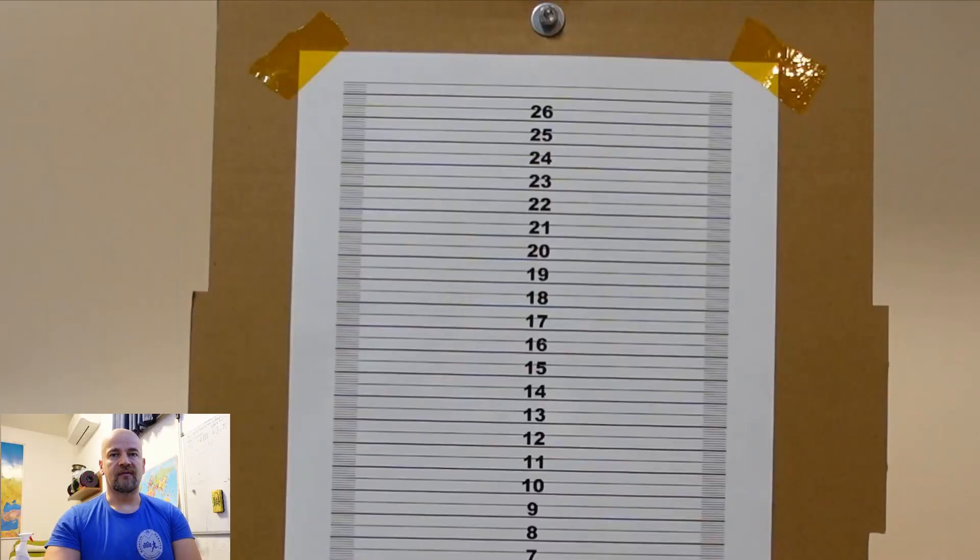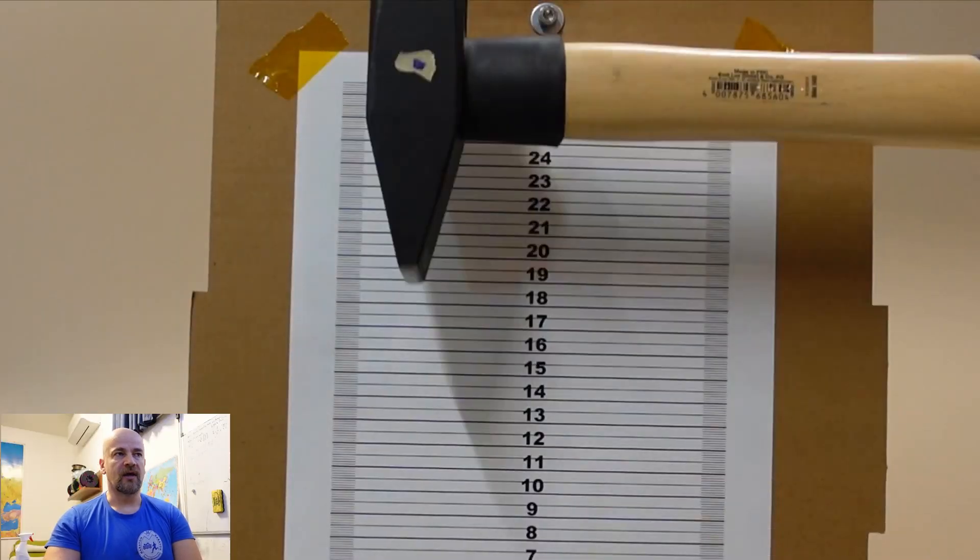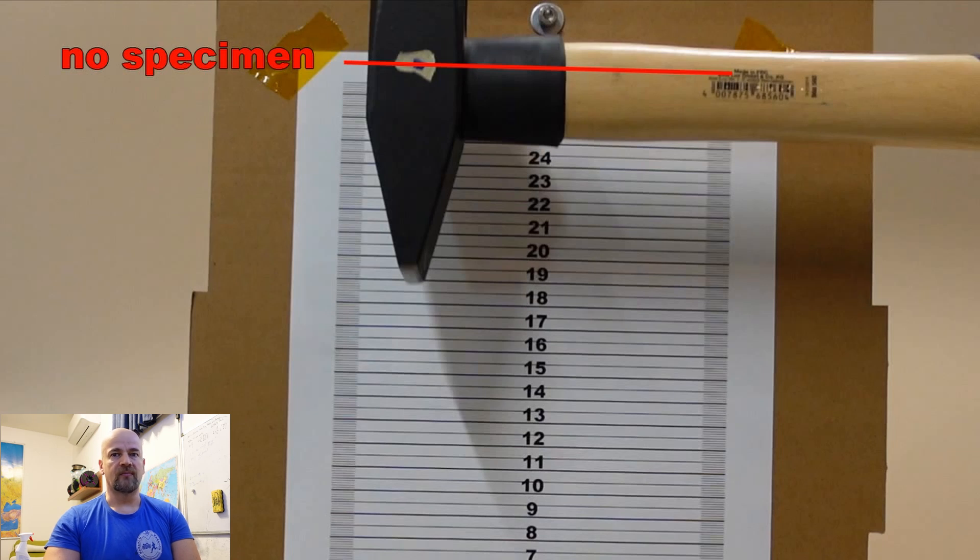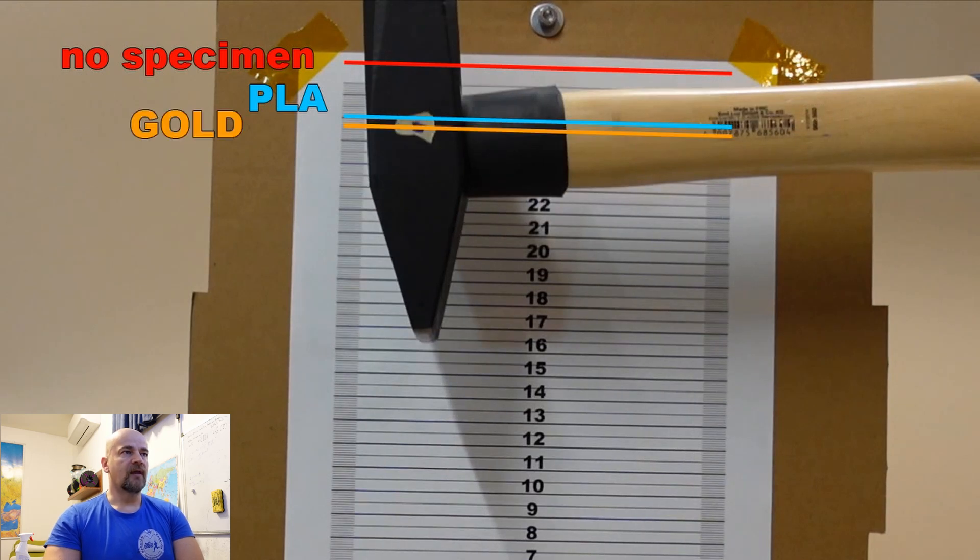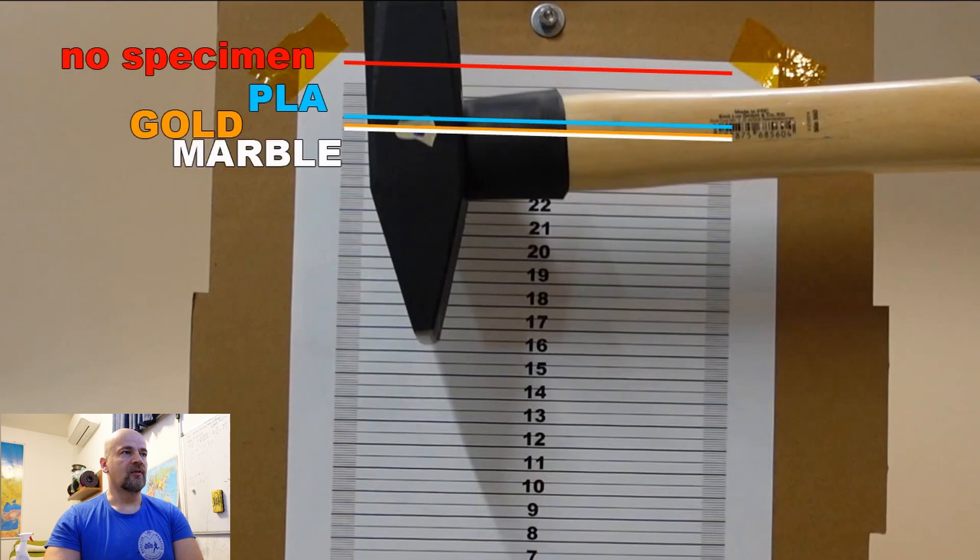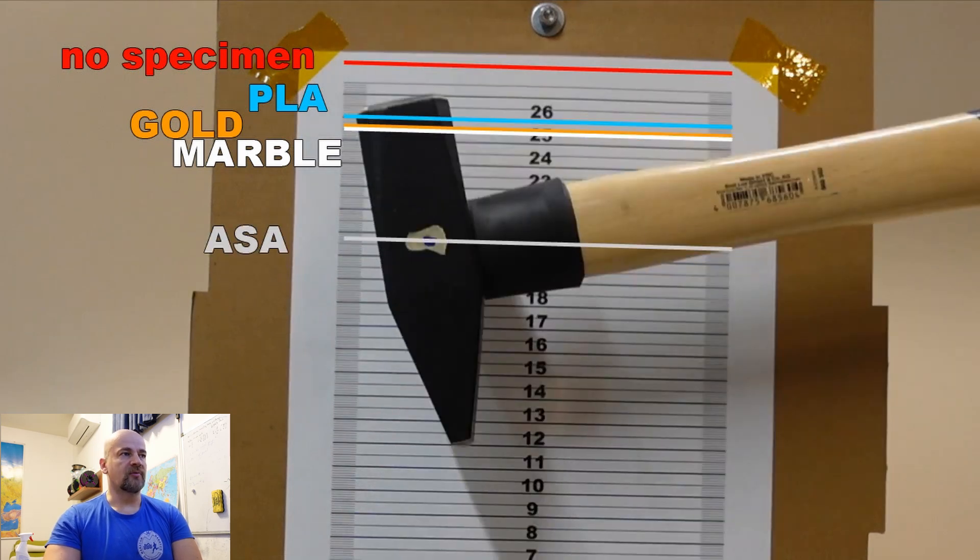So this is the length scale and this is the top position of the hammer where there was no specimen in the holder. And then this is the top position when the PLA bolt was placed inside the holder. And this is the top position for the gold silk filament. And this is the top position when the marble bolt was inside this holder. And just for reference, this is the top position when the ASA bolt was broken with this one kilogram hammer.